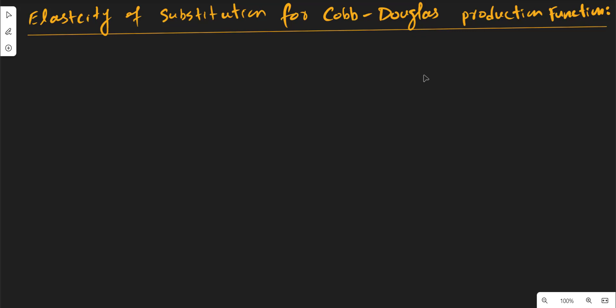Today in this lecture we are going to derive the elasticity of substitution for a Cobb-Douglas production function. Suppose that the Cobb-Douglas production function is given by Q = L^α · K^β. First of all we need to calculate the technical rate of substitution, and after that we will calculate the elasticity of substitution for the Cobb-Douglas production function.